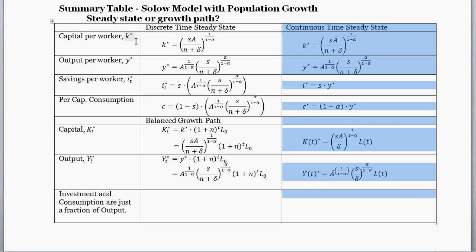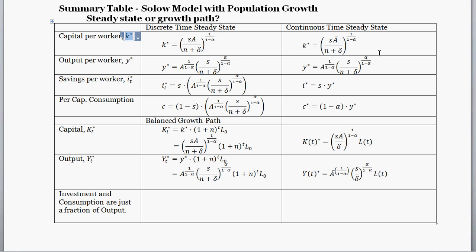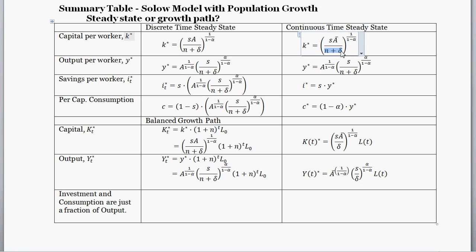For capital per worker, we have a steady state level of per-worker capital equal to this — it's a function of the savings rate, technology, population growth, depreciation, and the alpha term, which is the capital share of income. The main thing to focus on: the steady state level of per-worker capital is going to increase if the savings rate or technology increases, and it's going to decrease if population growth or depreciation increases.